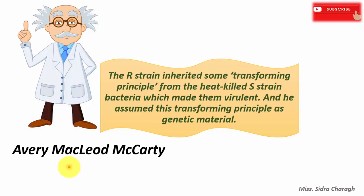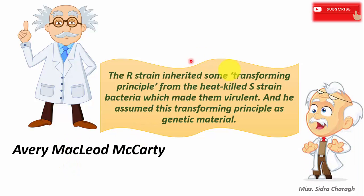The R strain inherited some transforming principle from the heat-killed S strain bacteria which made them virulent, and Griffith assumed this transforming principle was genetic material. These are the key points about Griffith's transformation experiment.